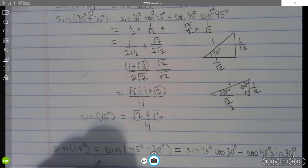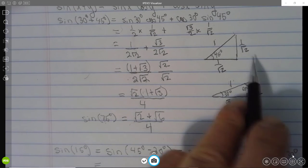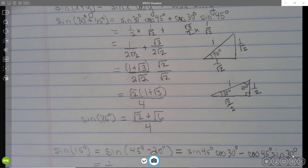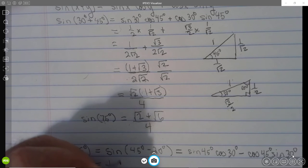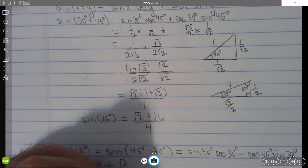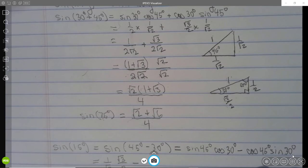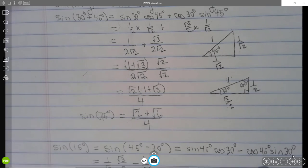So all I've got to do now is plug in my values. Sine of 45 degrees, I have computed that before, it's 1 over root 2. And cosine of 30 degrees is root 3 over 2. Minus cosine of 45 degrees, which is 1 over root 2. And sine of 30 degrees is 1 half.